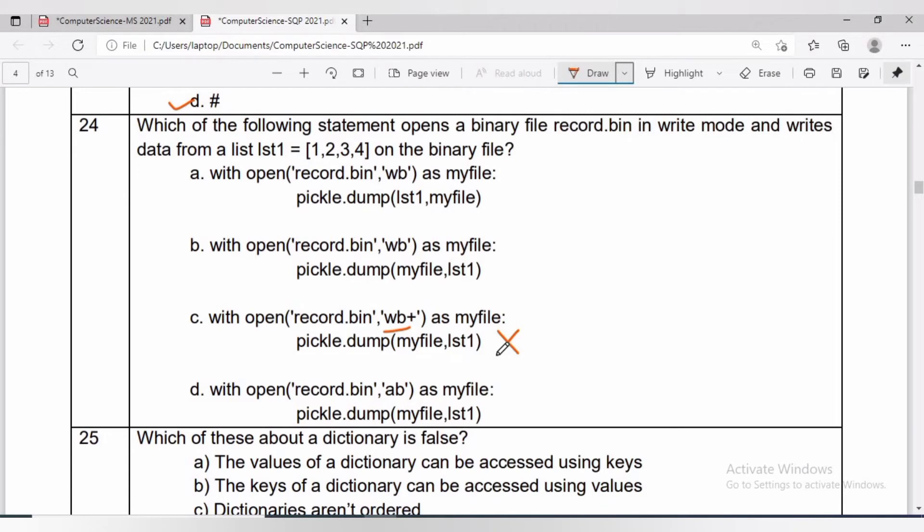Option 3 will not be the answer because 'wb+' is used to write and read. Option 4 is used to append. To write an object onto a binary file, the file should be opened in write mode and we should use dump function of the pickle module.